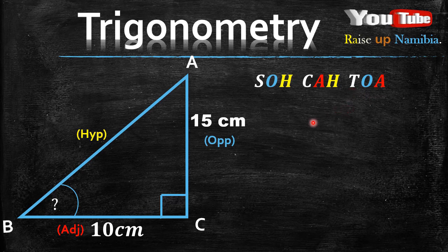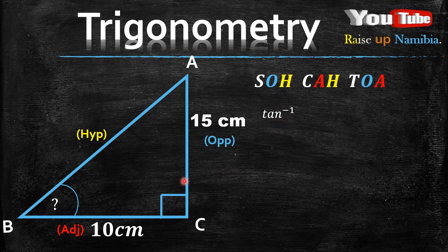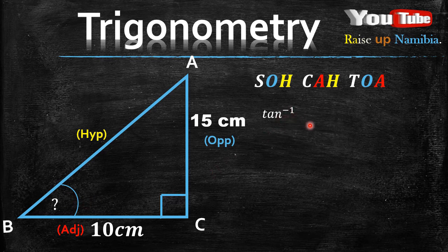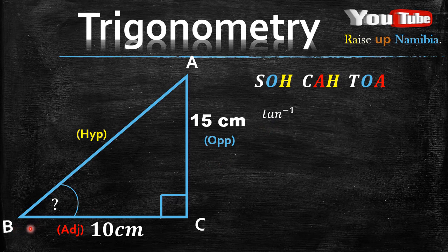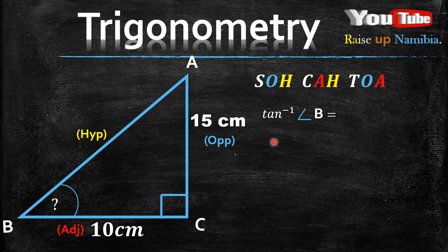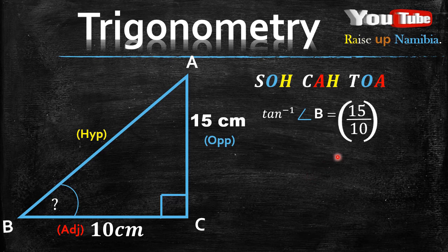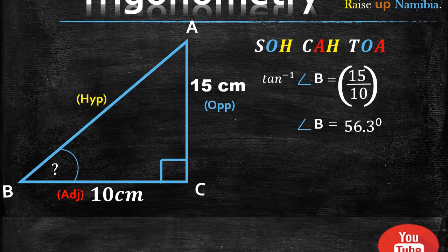So what does the T stand for? It's tangent. Now not just tangent, but the inverse of tangent. Why is it the inverse of tangent? Because we are looking for the angle. And every time we look for the angle, we use the inverse. So what do we write next to the inverse of tangent? We write the name of the angle, which is B, equals the opposite divided by the adjacent. So our opposite is 15 and our adjacent is 10. Remember to put it into brackets and you use the same method that I showed you on the calculator. So your answer will be 56.3 degrees. And that's your final answer.